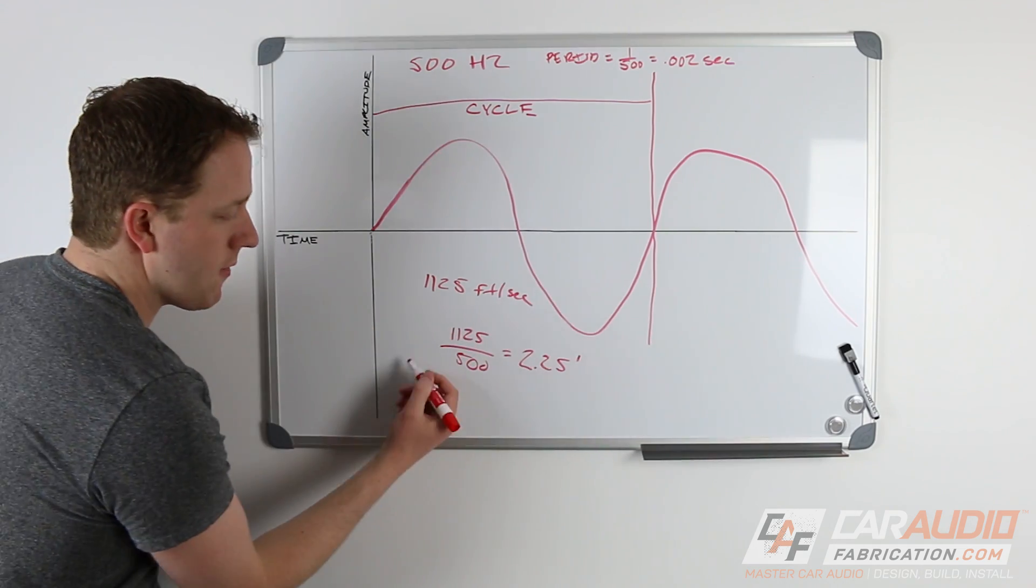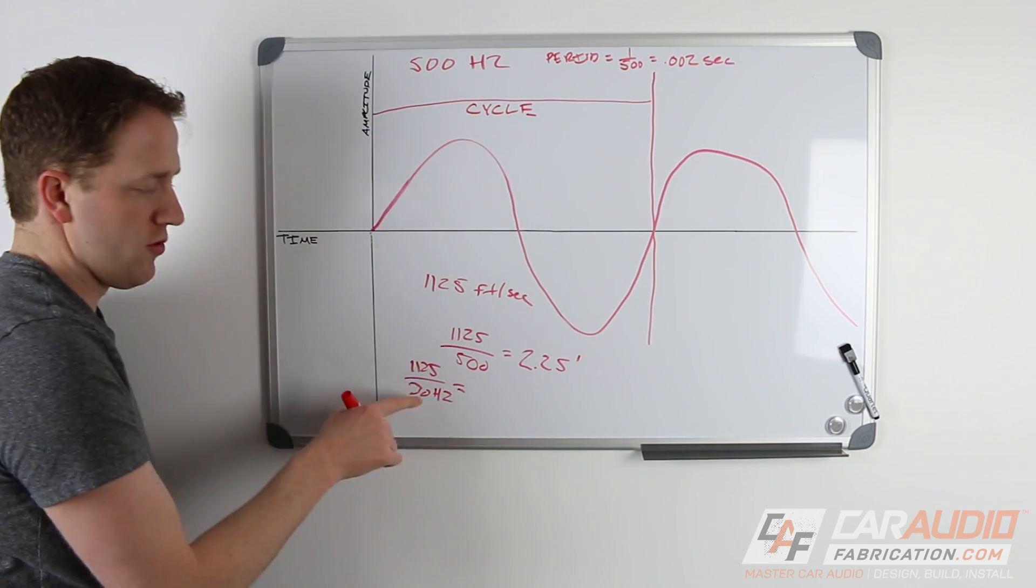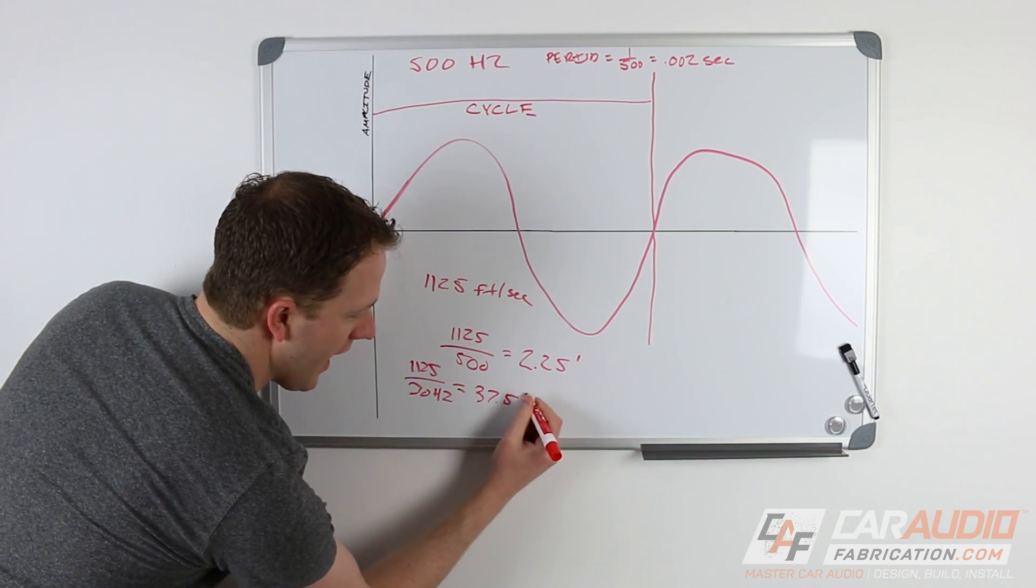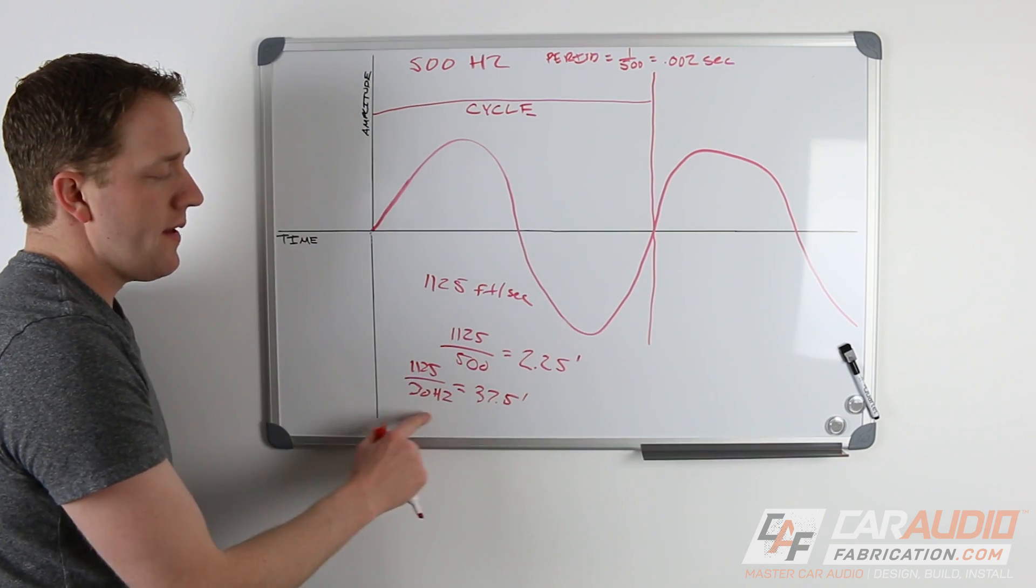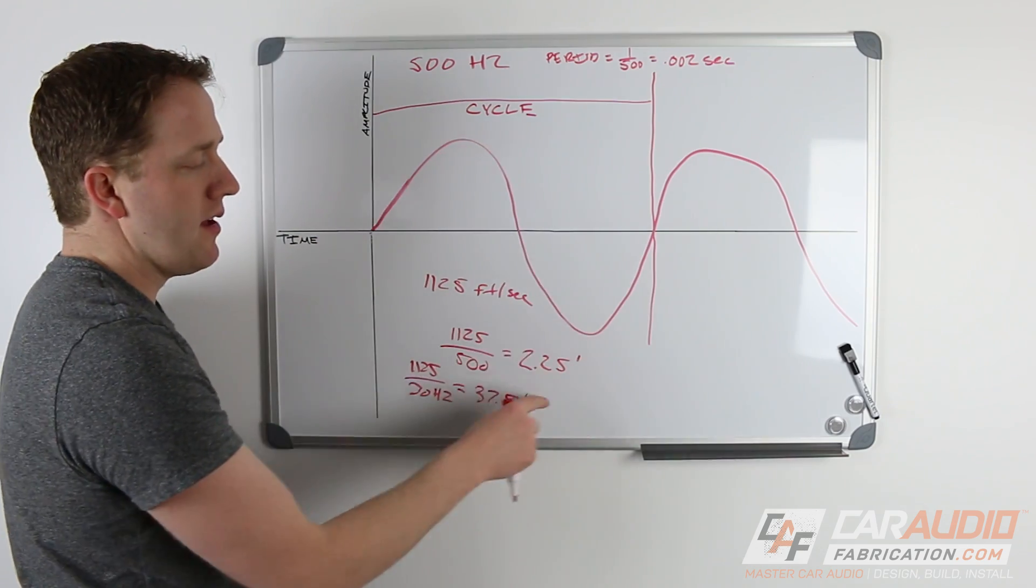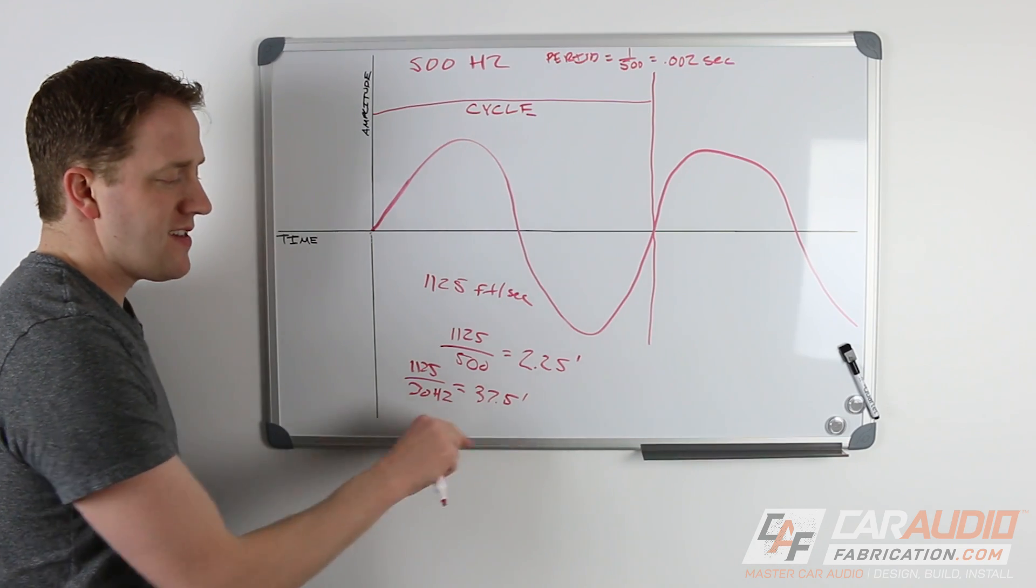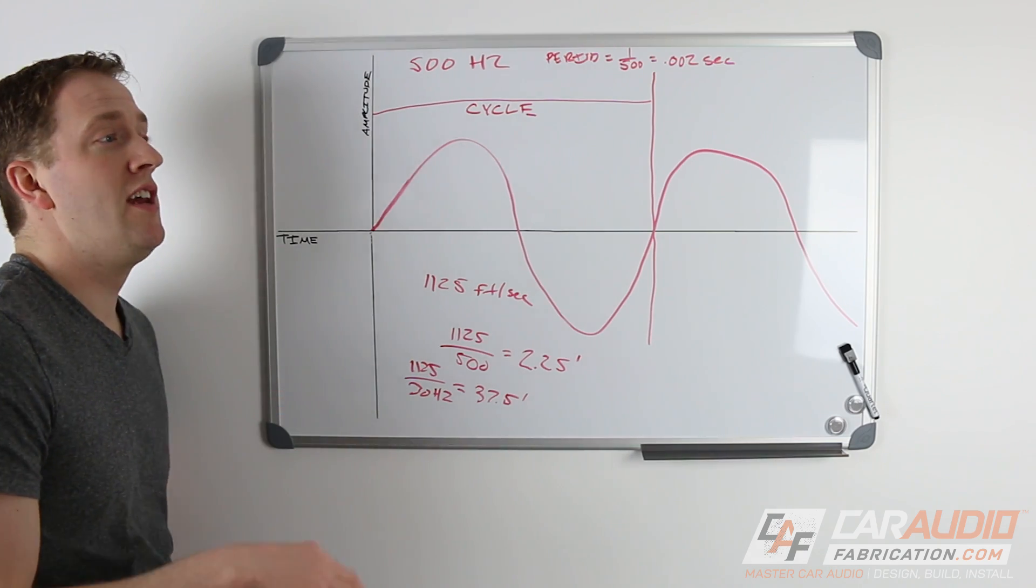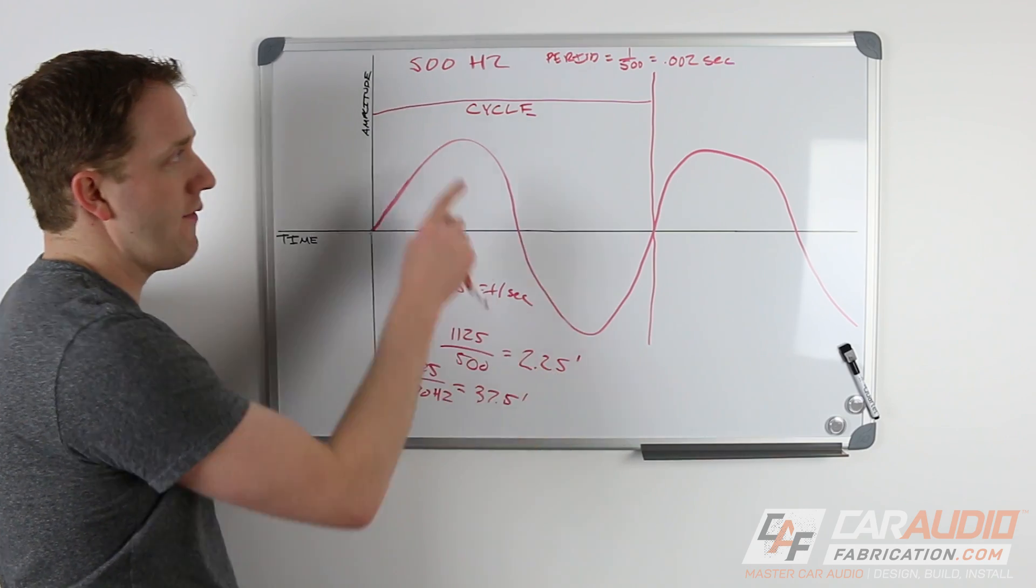Now again, let's compare the subwoofer. Let's say 1125 divided by 30 hertz, because we're talking about a subwoofer here, that would have a distance of about 37 and a half feet. So the reason I want to make this comparison here is so that you guys understand that a bass frequency sound wave has a much longer wavelength than a higher frequency. In fact, as a quick side note, this long distance is part of the reason that a subwoofer can sound good facing away from the listening position and really anywhere in the vehicle. It's not as critical as a shorter wavelength frequency.